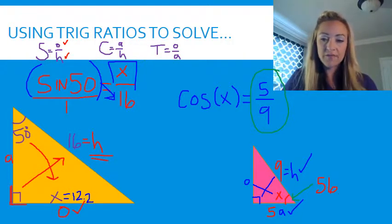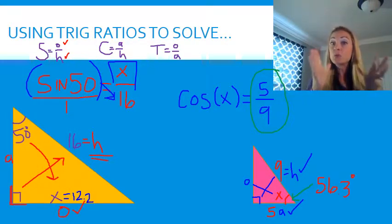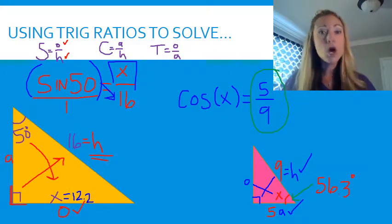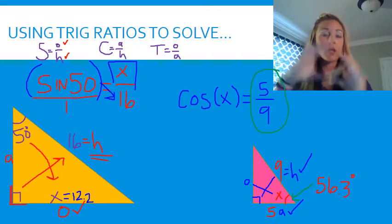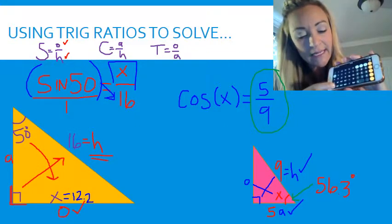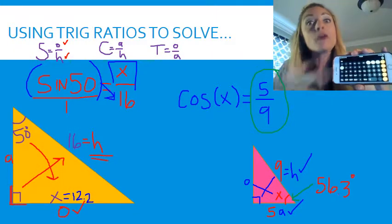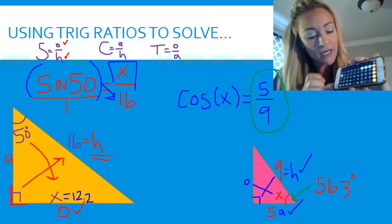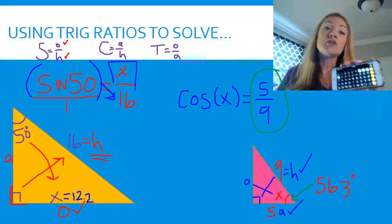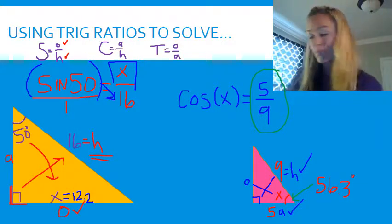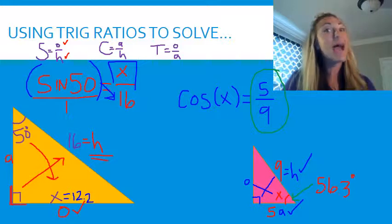One super important thing: make sure your calculator is in degree mode, not radian mode. If your calculator says 'rad' at the top, you are in radian mode — that does not mean you're rad, it means you need to switch! Push degree mode instead. Since we're talking about degrees of triangles and circles, always make sure your calculator does not say 'rad' at the top. Use a good calculator and know how to use it.